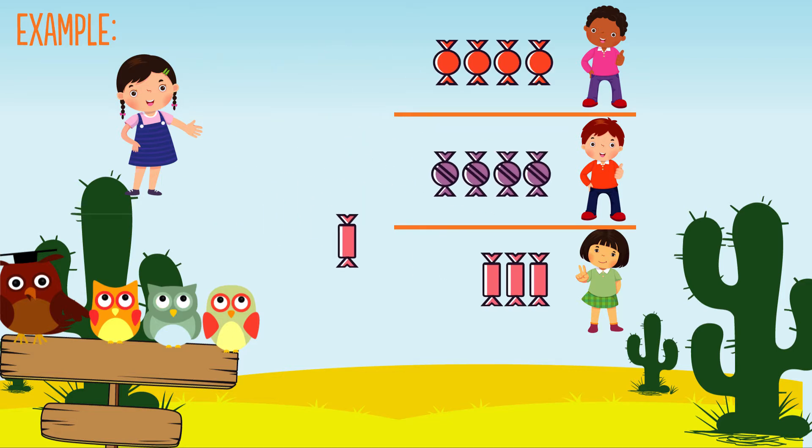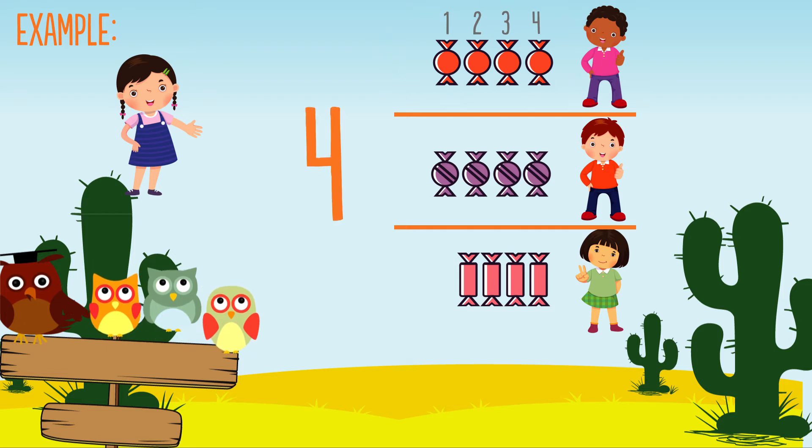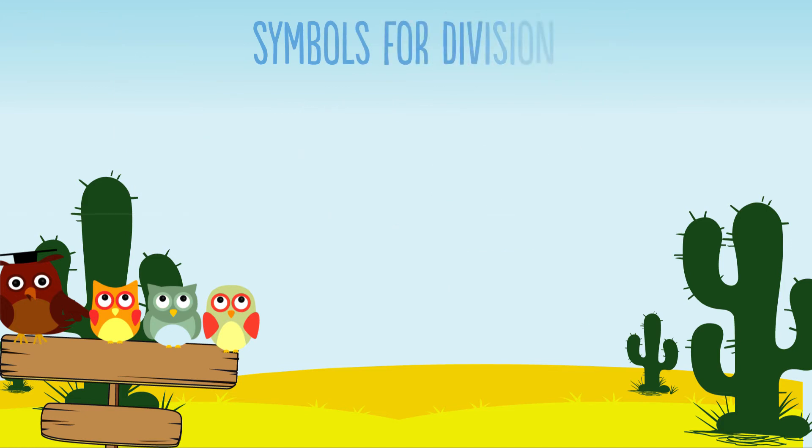Let's count how many sweets are in each group to get our answer. 12 sweets shared equally between three friends is four. These are the symbols for division. Other words for division are share between and divided by.